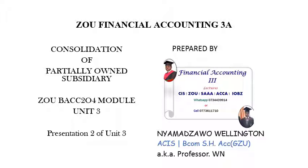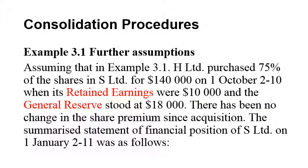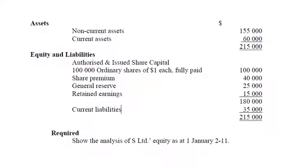Let's go to our consolidation procedures. We'll pick up from where we left off in Presentation 1, Example 3.1, and move on to further sections on page 50. H Limited purchased 75% of shares in S Limited for $140,000 on 1 October 2010, when retained earnings were $10,000 and general reserves were $18,000. There has been no change in share premium since acquisition. The summarized statement of financial position of S Limited on 1 January 2011 shows general reserves now at $25,000 and retained earnings at $15,000.